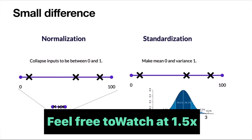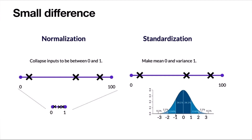Before going into the topic, I want to clarify two commonly used terms: normalization and standardization. When we say batch normalization, it is not actually normalization we are doing — we are actually doing standardization. Normalization means taking the maximum and minimum and scaling values between them, so values range between 0 and 1. Standardization, on the other hand, makes the mean 0 and variance 1. This is exactly what we are doing in batch normalization.